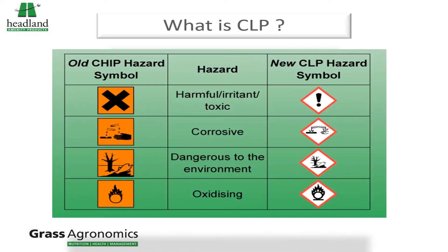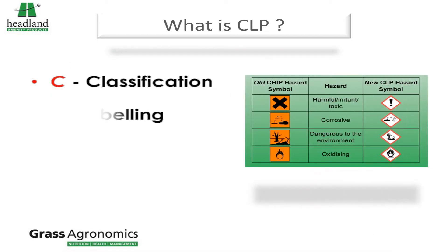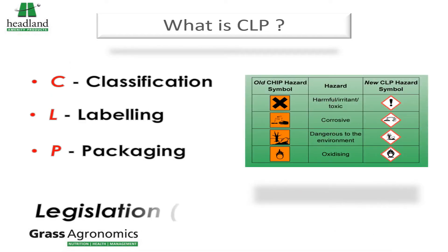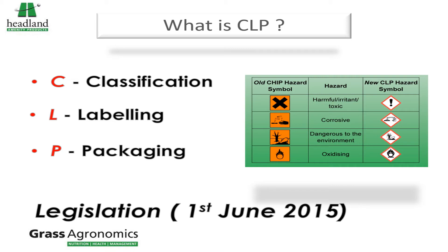You may all be familiar with the symbols on the left, but it may surprise you to know that these so-called pictograms became redundant in mid-2015. CLP is the Classification, Labelling and Packaging legislation which came into force on the 1st of June of that year, covering the whole world right down to household cleaning products. It is the symbol on the right that you should now see on all the products that you purchase.